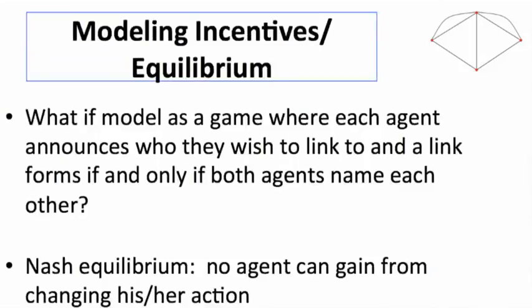In terms of modeling incentives, let me first make a very simple point. Let's think of a world where we need consensus to form links, so two individuals have to agree to be friends. I can't form a friendship with somebody else if they don't agree to be friends with me.